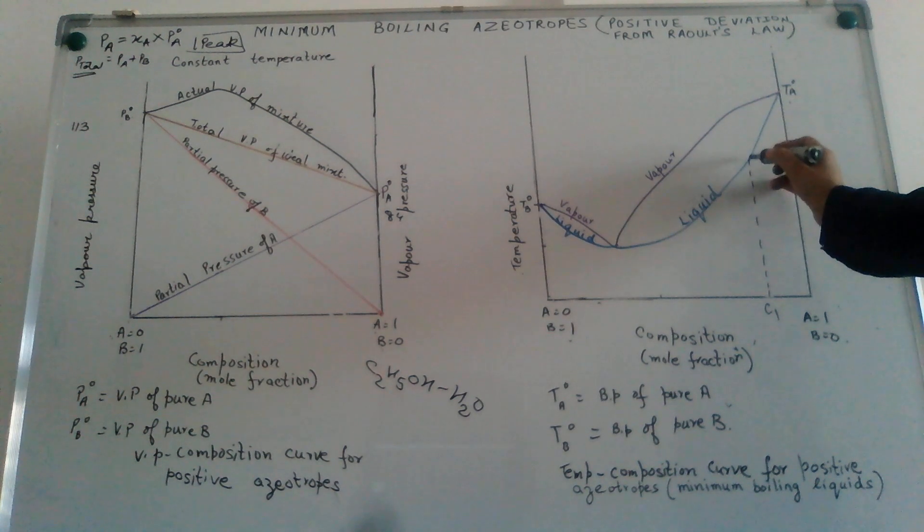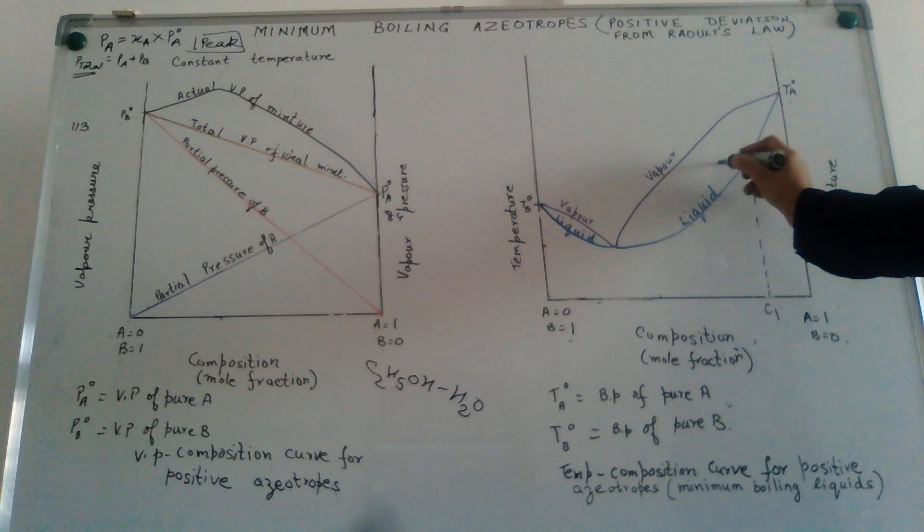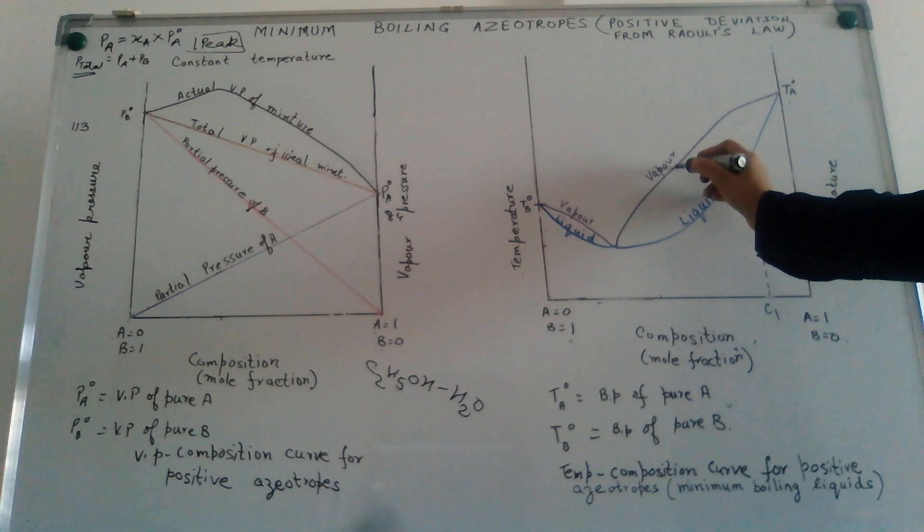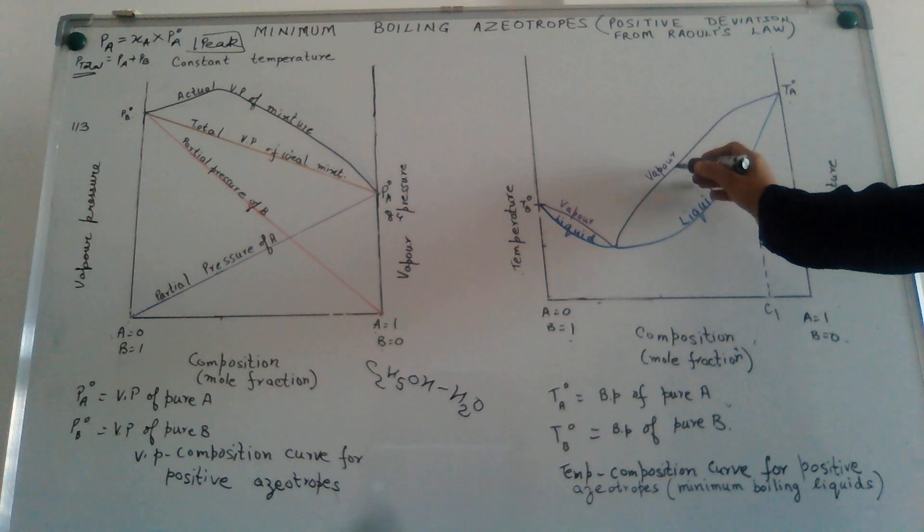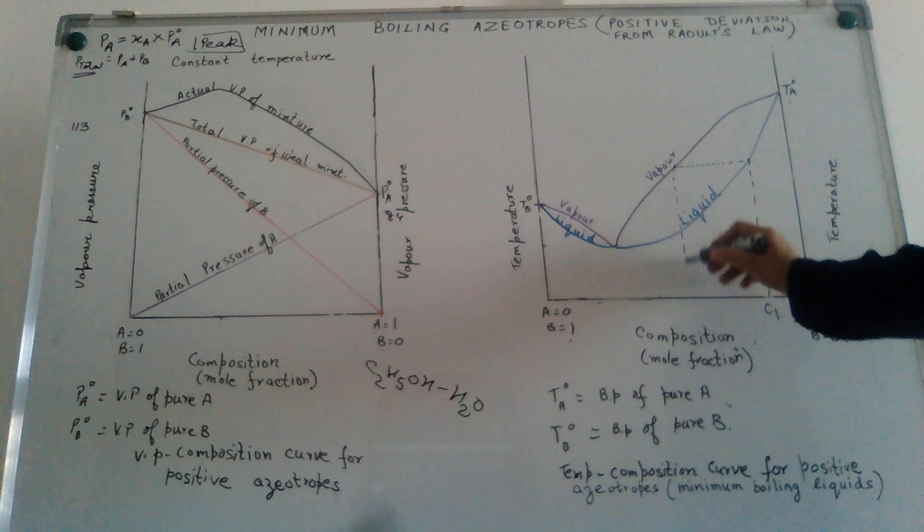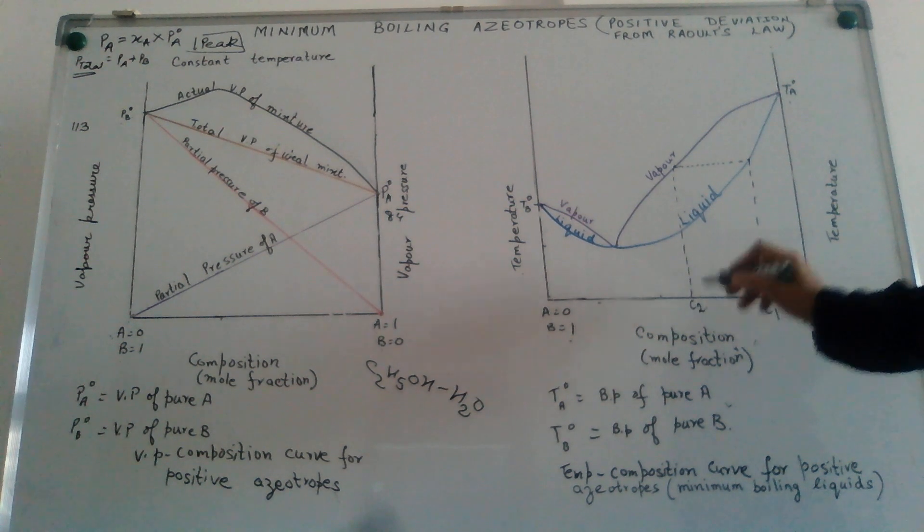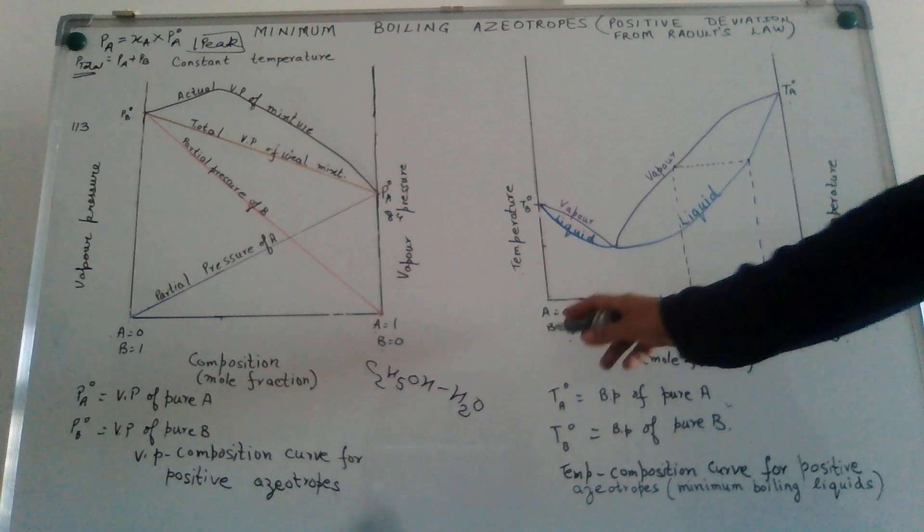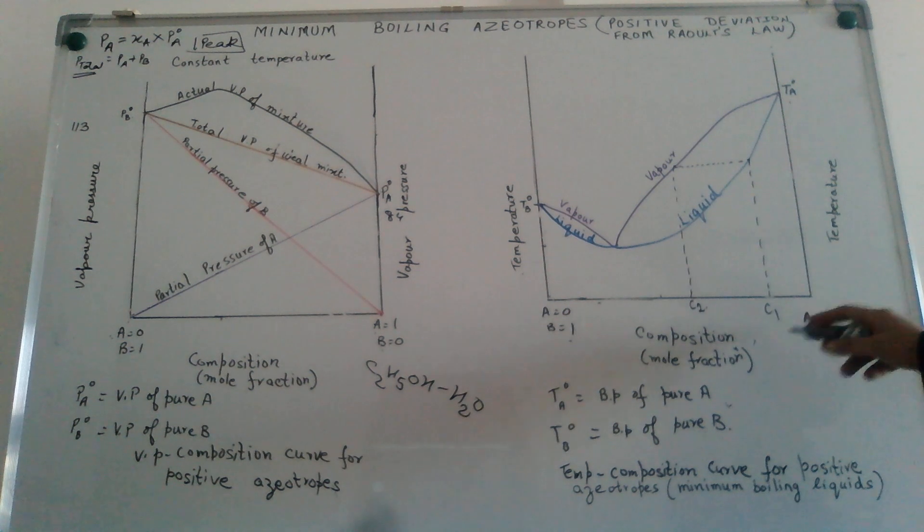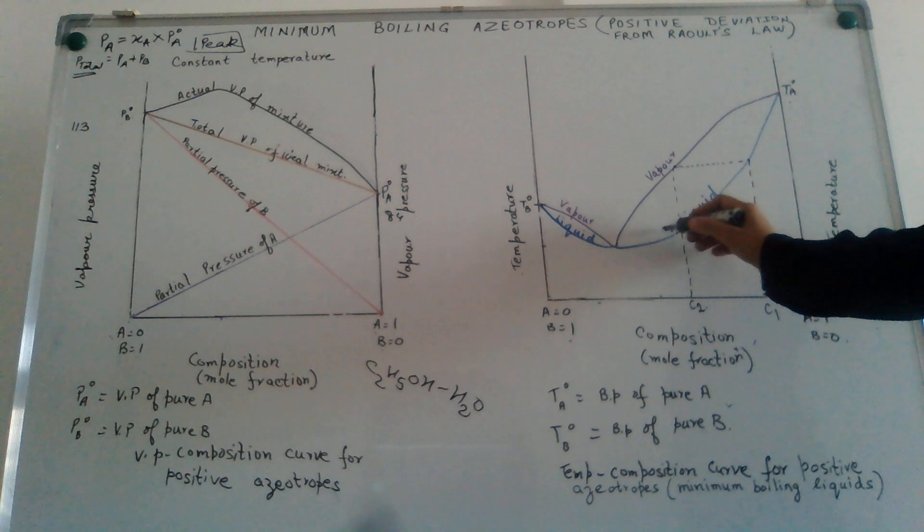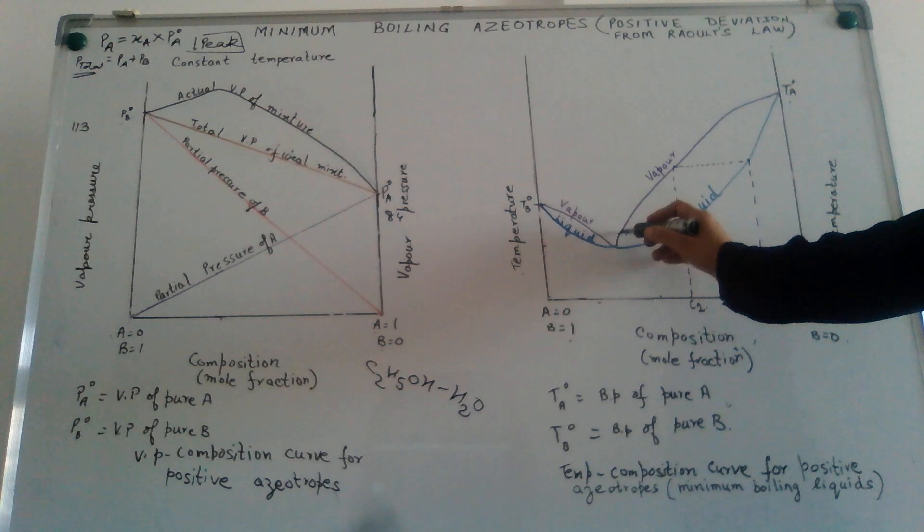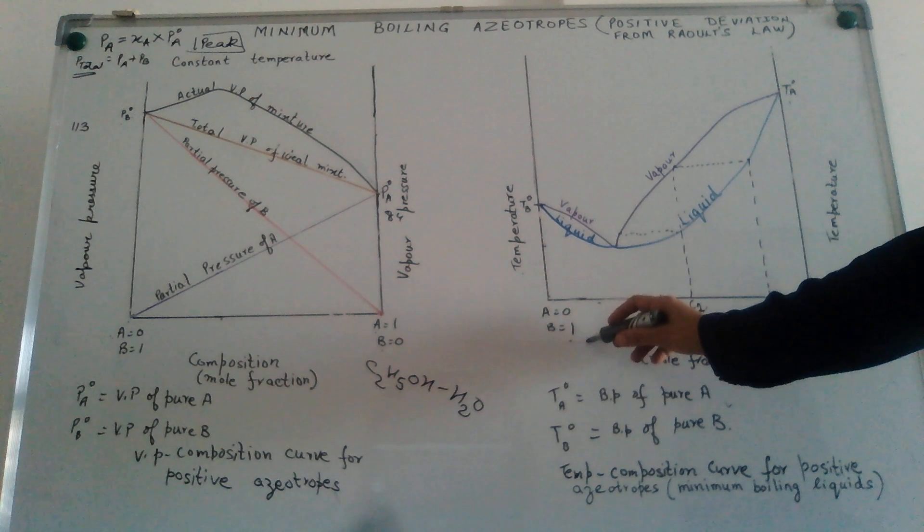When it begins to boil, the temperature becomes constant because there is a change of phase happening. When it begins to boil, the vapor phase now, if you notice, has the composition C2, which is richer in B compared to the composition at C1. We condense this vapor and again heat it.